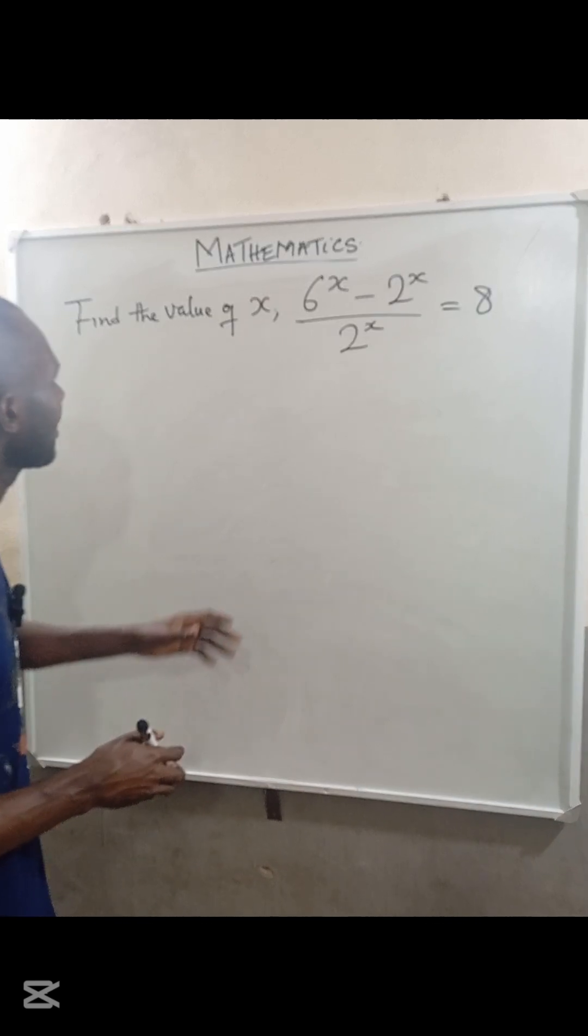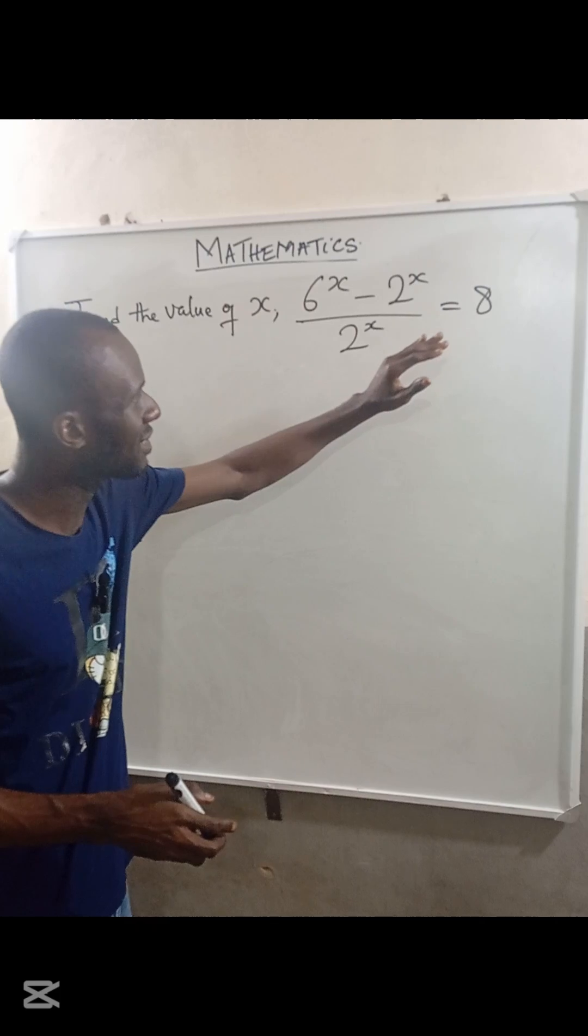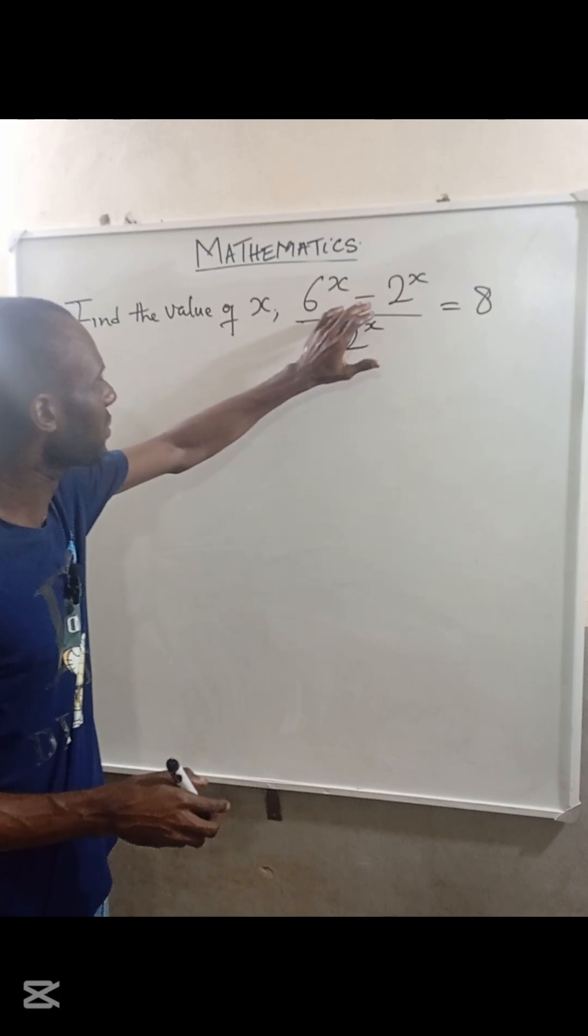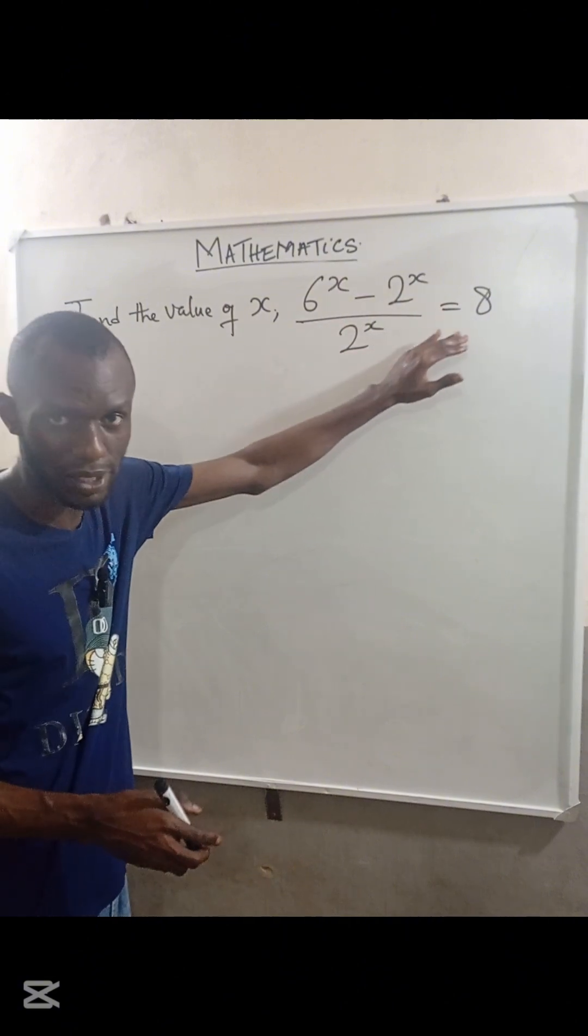Hi, in this mathematical equation here, we are asked to find the value of x, given that (6^x - 2^x) / 2^x = 8.